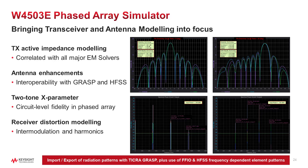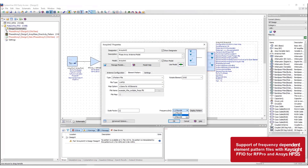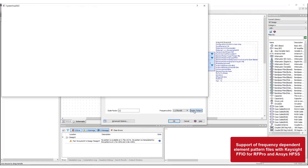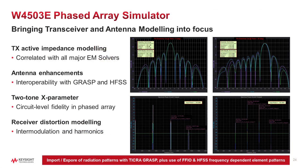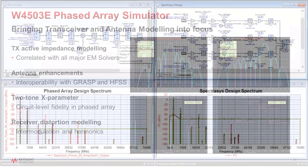We can also import frequency dependent element pattern files from HFSS, plus convert directivity polarization patterns to azimuth elevation grid. The updated X-parameter model support now includes two-tone models, and we have also introduced an improved one-tone IP3 estimation using the third harmonic with a circuit-link model.